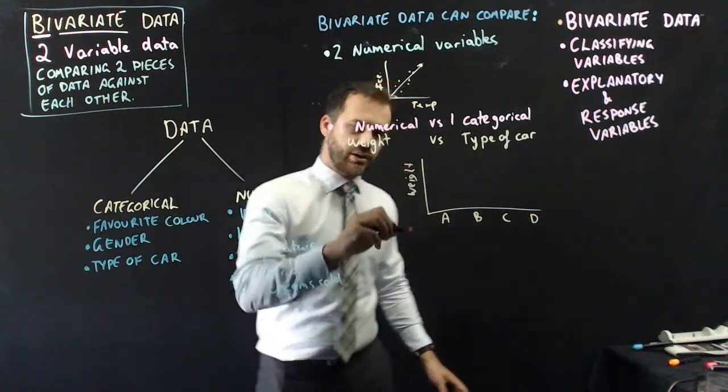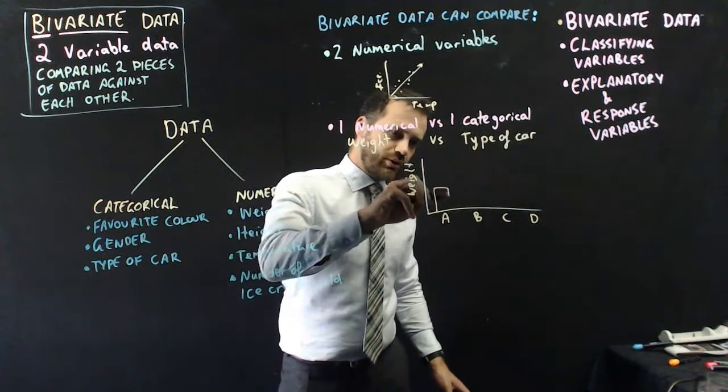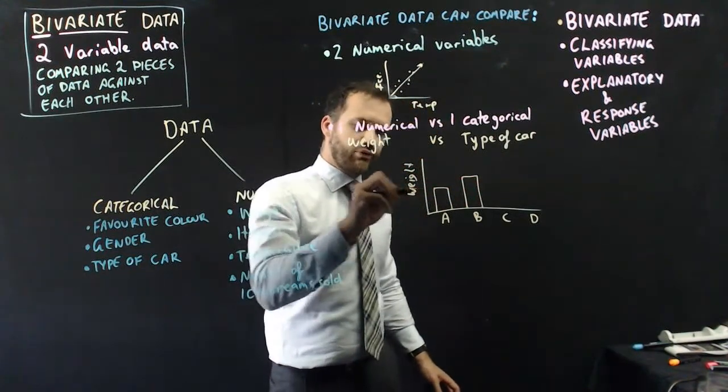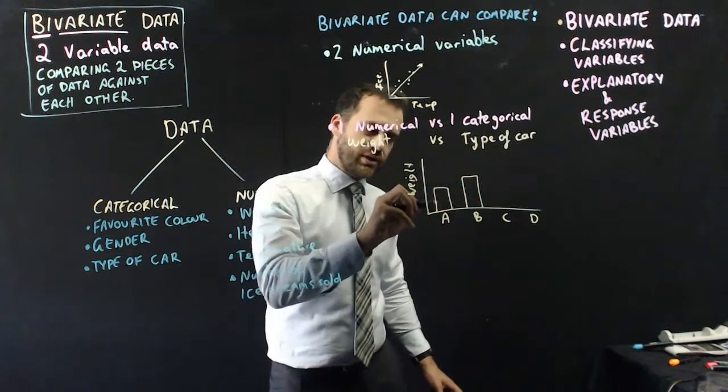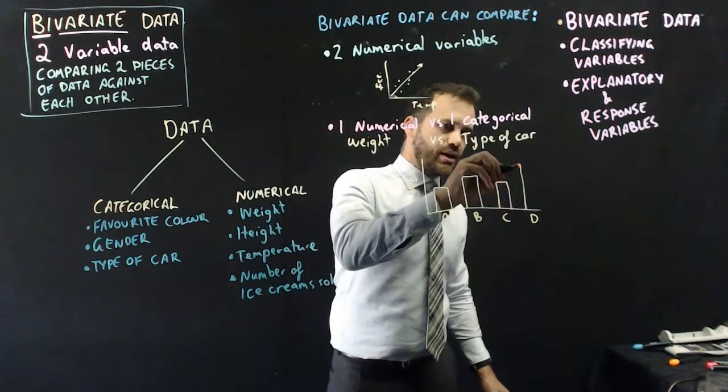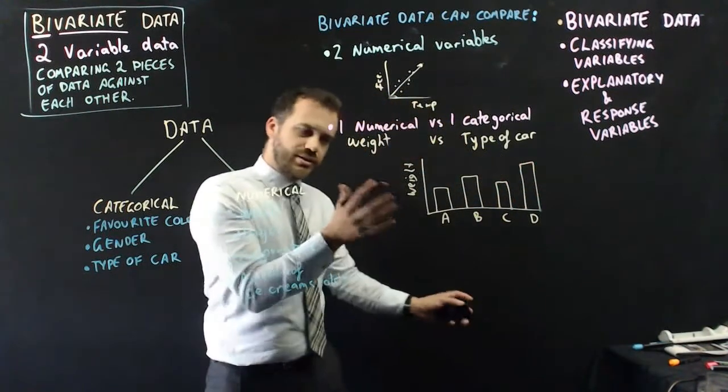And then on this axis we would have their weight here in kilograms, right? And we could create some bar charts where this is the average weight of the person that drives car A, this is the average weight of the person that drives car B, car C, and car D.